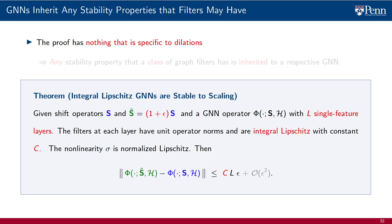A fact that we did not remark at the time, but that we have to remark now, is that the proof of stability for GNNs has nothing that is specific to dilations. All of the steps of the proof apply to any stability claim that we have on the filters that make up the layers of the GNN. Therefore, any stability property that a class of filters has is inherited to a respective GNN, in which the filters at each layer belong to the given class for which a stability claim has been made.